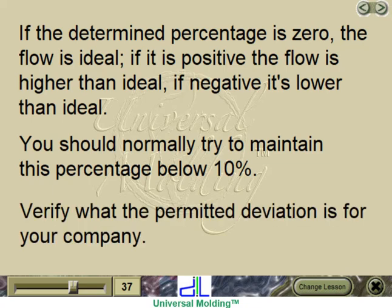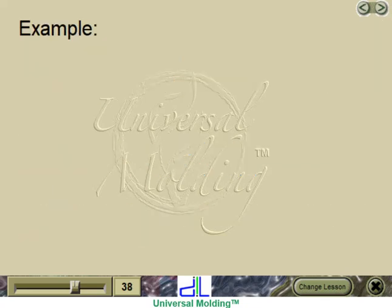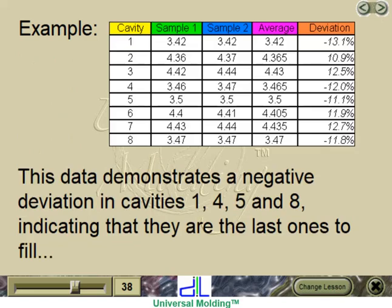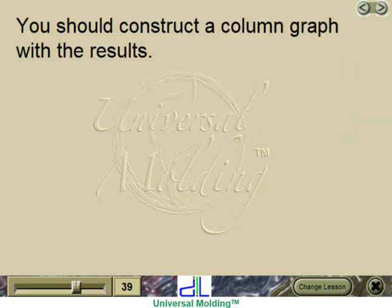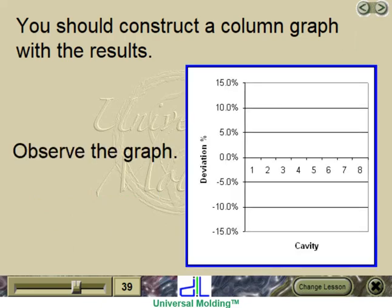Verify what the permitted deviation is for your company. Example: this data demonstrates a negative deviation in cavities 1, 4, 5, and 8, indicating they are the last ones to fill, and a positive deviation for cavities 2, 3, 6, and 7, indicating they are the first to fill. You should construct a column graph with the results.